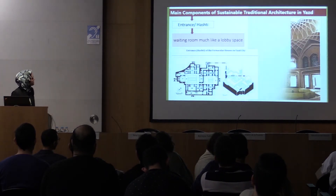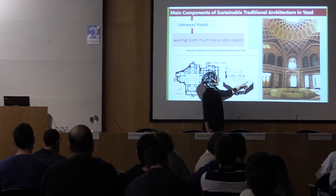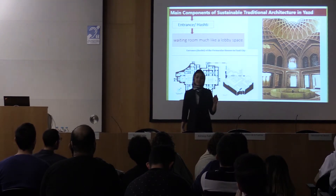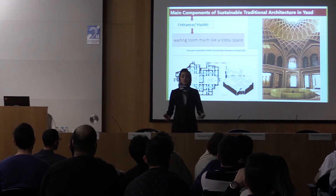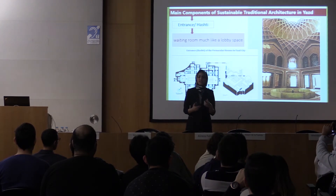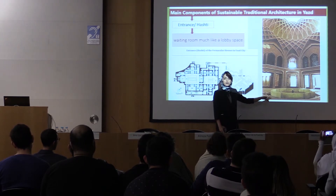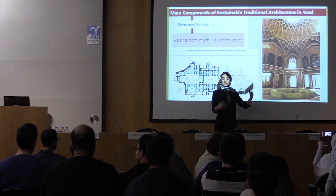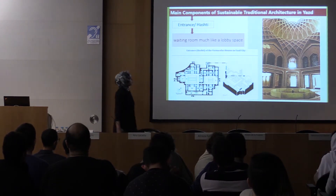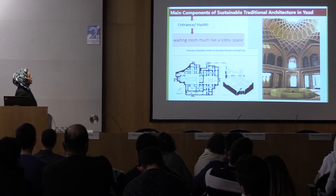Another component is the hashti, the entrance. This house is called the Gerami House in Yazd, and here is the entrance. One reason hashti exists is that Iranians are hospitable people who want to welcome guests. Some guests come but don't want to enter the room — they just want to talk at the entrance. Traditional architects made this entrance beautiful, aesthetic, and a pleasant place for guests, like a lobby. It also features a dome with horno — the lighting opening — creating beautiful shadow and light patterns from the roof.